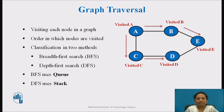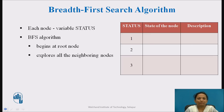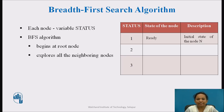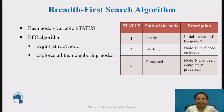Let us see the BFS method in detail. In this algorithm, every node in the graph has a variable called status, set to value 1, 2, or 3 to indicate its current status. The value 1 indicates ready status — the initial state of the node. The value 2 indicates waiting status, meaning the node is placed in the queue and waiting to be processed. The value 3 indicates processed status, meaning the node has been completely processed.